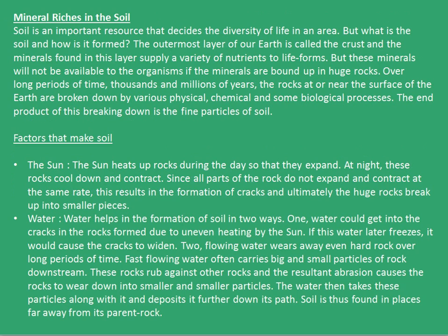Moving on, let's look at the third resource, that is the soil. Soil is an important resource that decides the diversity of life in an area. The outermost layer of our earth is called the crust, and the minerals found in this layer supply a variety of nutrients to life forms. But these minerals will not be available to organisms if they are bound up in huge rocks.